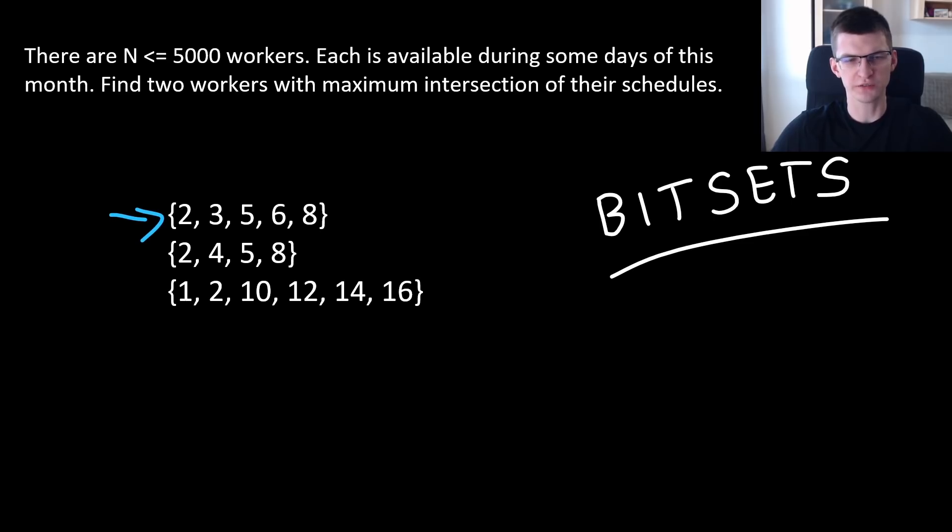For example, if this is schedule of the first worker - he is available on second, third, fifth, sixth and eighth day - then second and third worker. For each pair we can compute their intersection. For those two, they will be both at work on days 2, 5 and 8, so their intersection is 3.